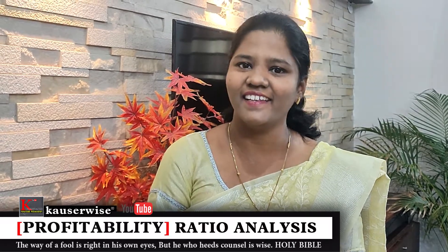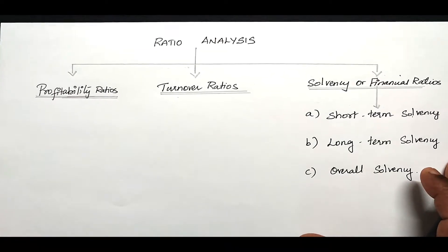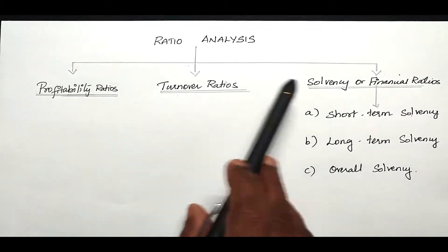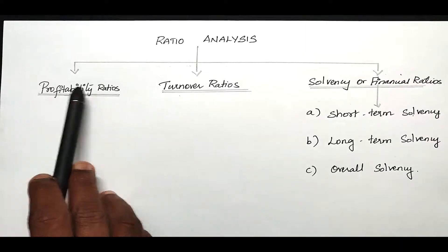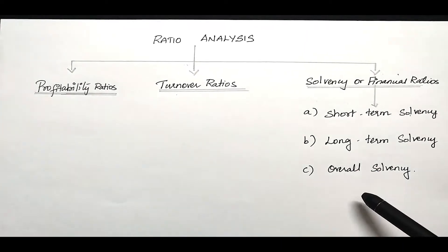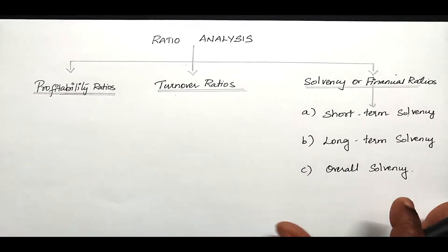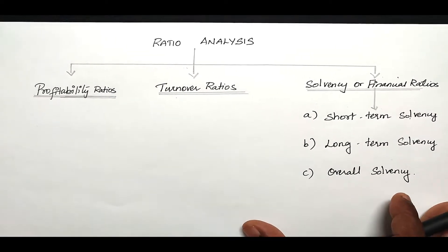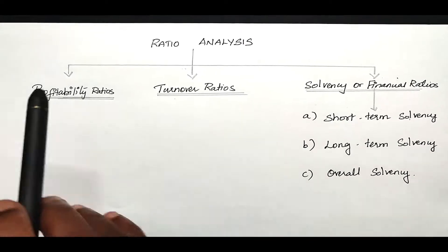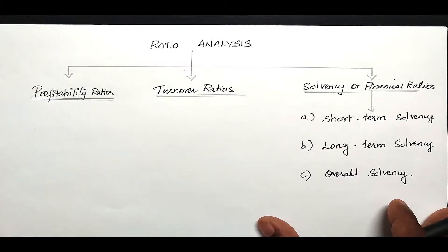Hi, welcome to my channel. This is Kouser Weiss. In this series we are going to see ratio analysis. In that we have three divisions: number one, profitability ratios, turnover ratios and solvency ratios. We are going to see one by one along with the numerical problem. You can find the playlist link in the description box. Now in this video we are going to see the first one, that is profitability ratios. Let's get into the video.